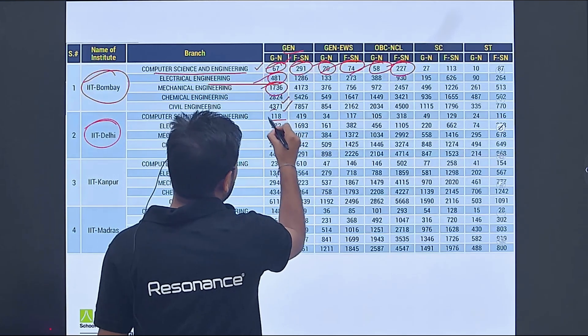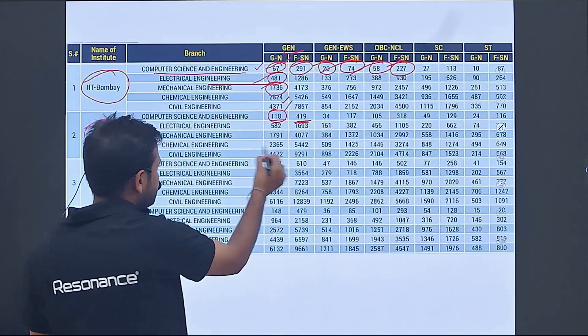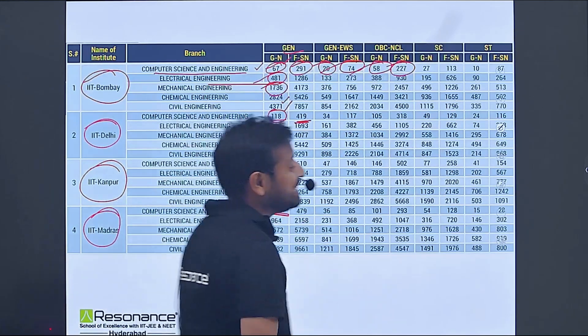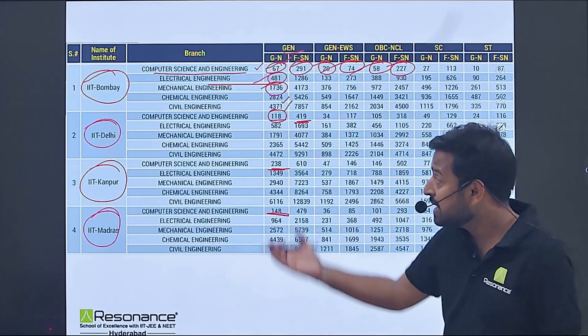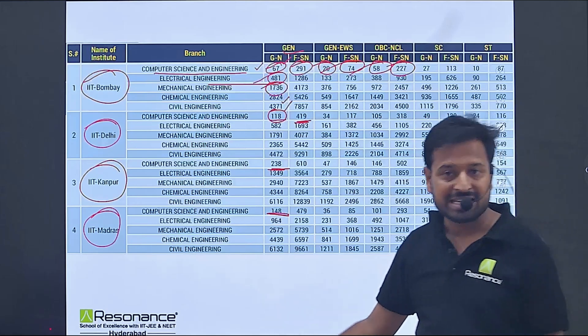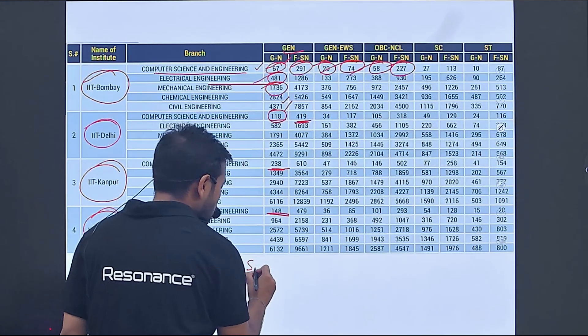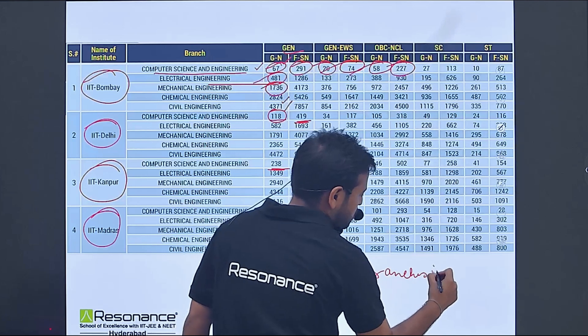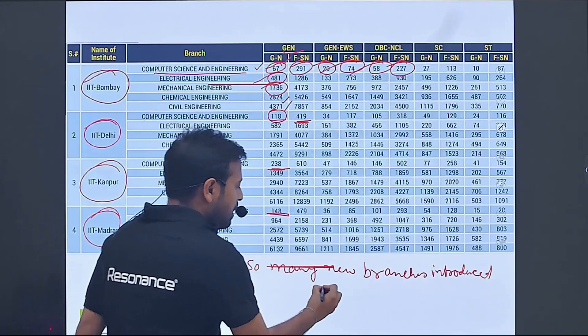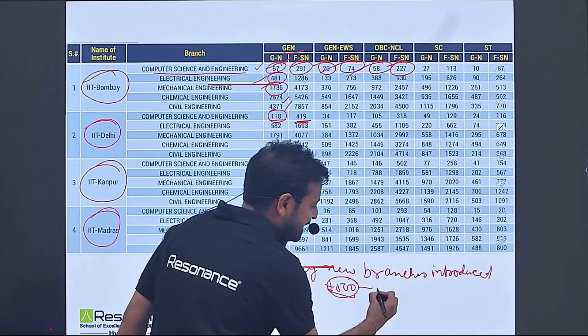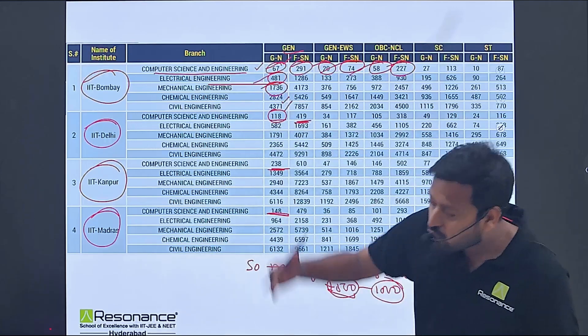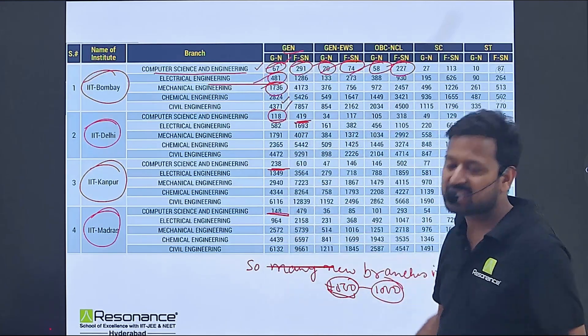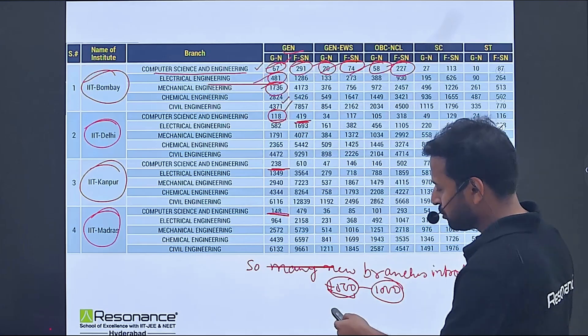Number two best college is IIT Delhi - CSE closed at 118 for general, female 419. IIT Kanpur number three, CSE closed at 238. IIT Madras, CSE closed at 148. If you're getting these types of ranks, you can expect admission obviously in round one. One important thing - so many new branches have been introduced, so whatever rank is showing, you can expect plus 500, a difference of 500 to 1000 ranks, especially when you go deeper. This time 350 seats have been introduced in IITs.